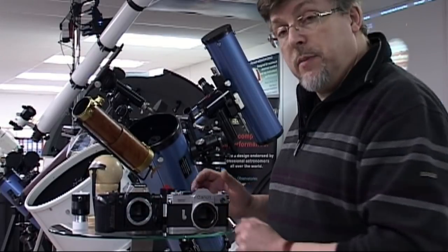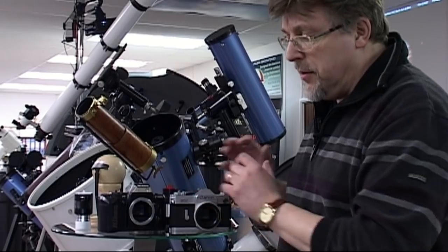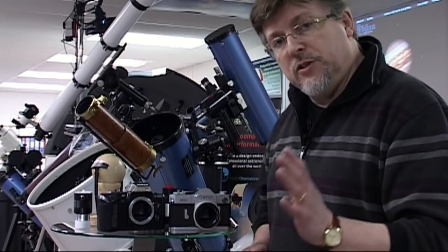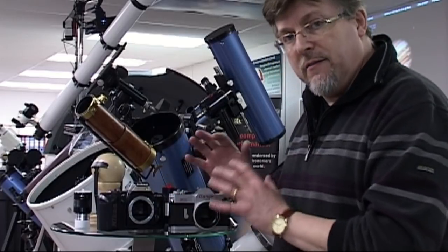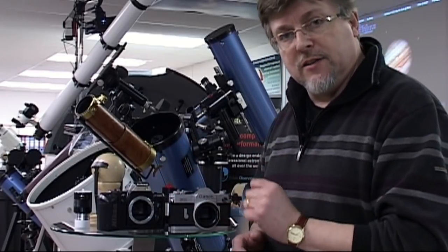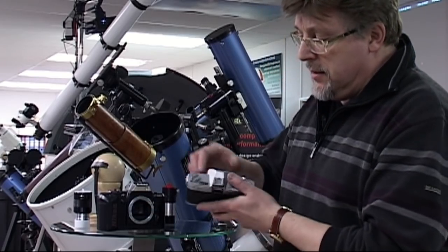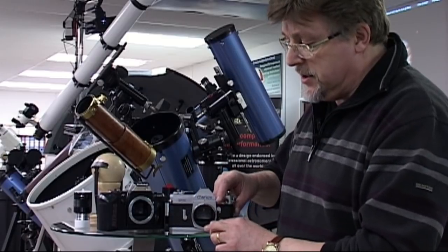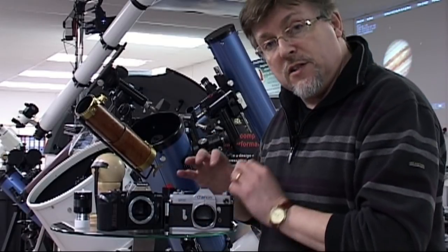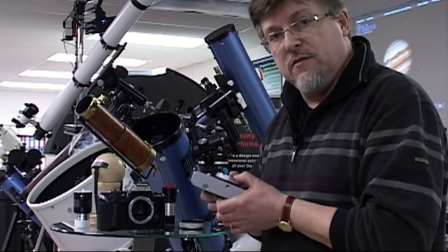Now these are both film cameras and they're both SLRs that use 35 millimeter film, but your digital SLR has exactly the same design fundamentally, especially as regards connection to the telescope. It'll have this large throat - you'll need a T connector to enable you to attach it to the camera. Now the first problem that we get with this type of camera is the sheer thickness of the body.